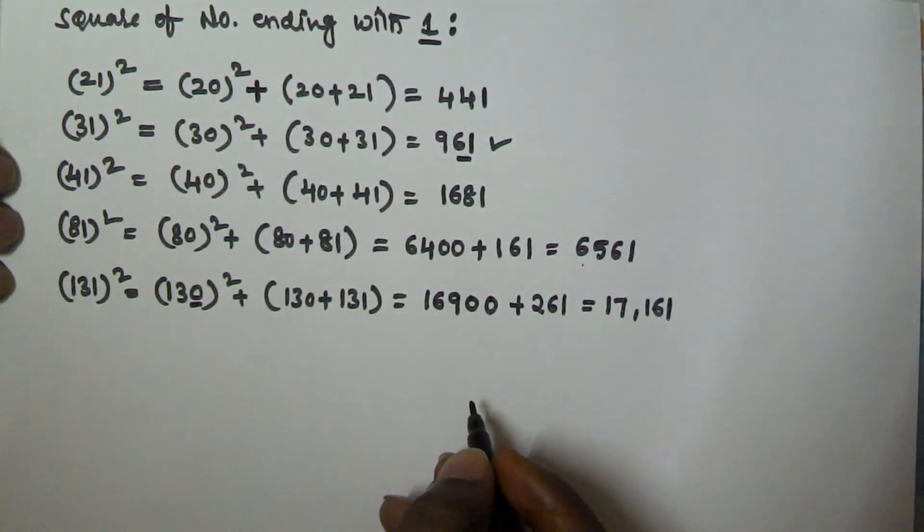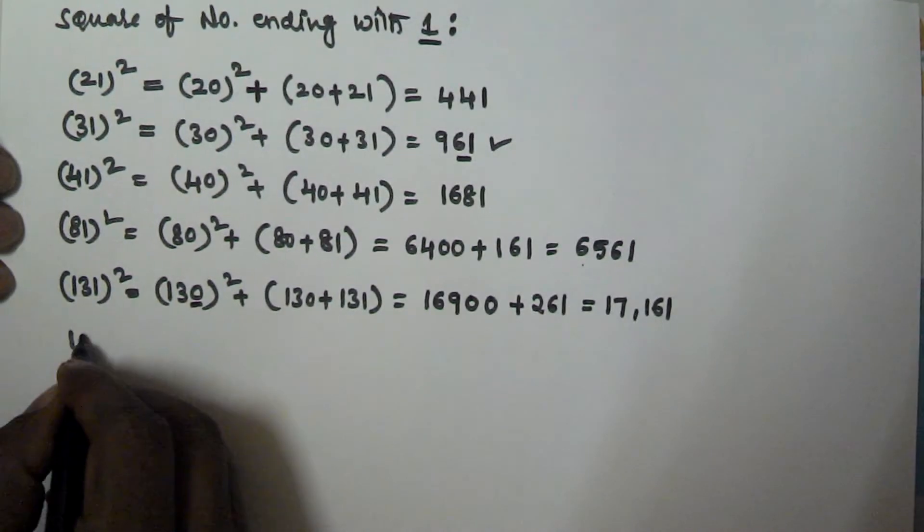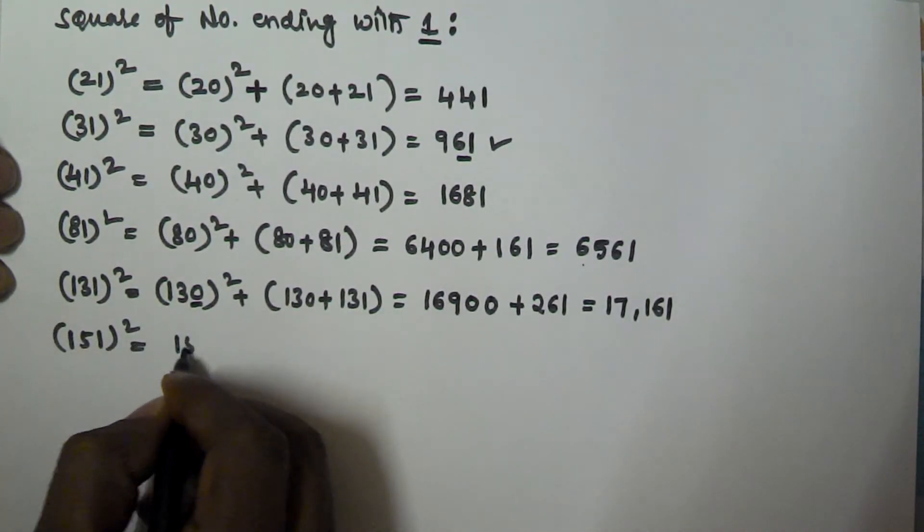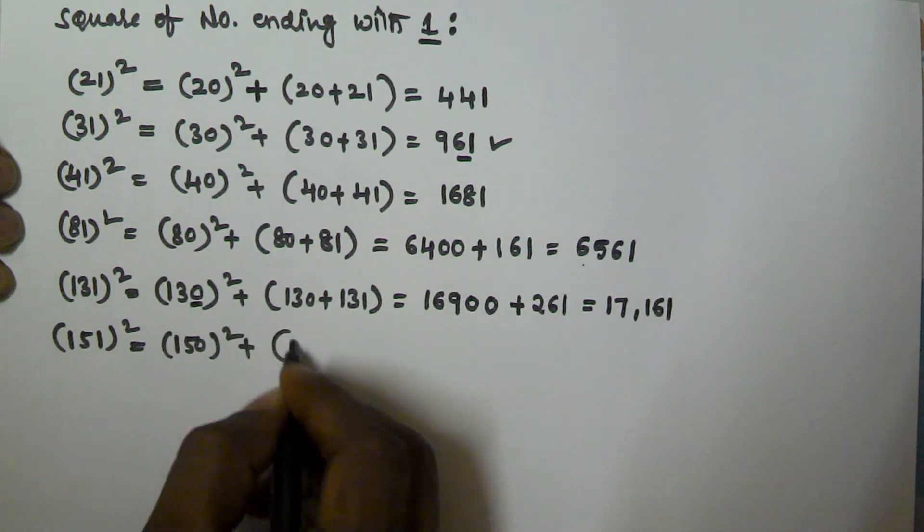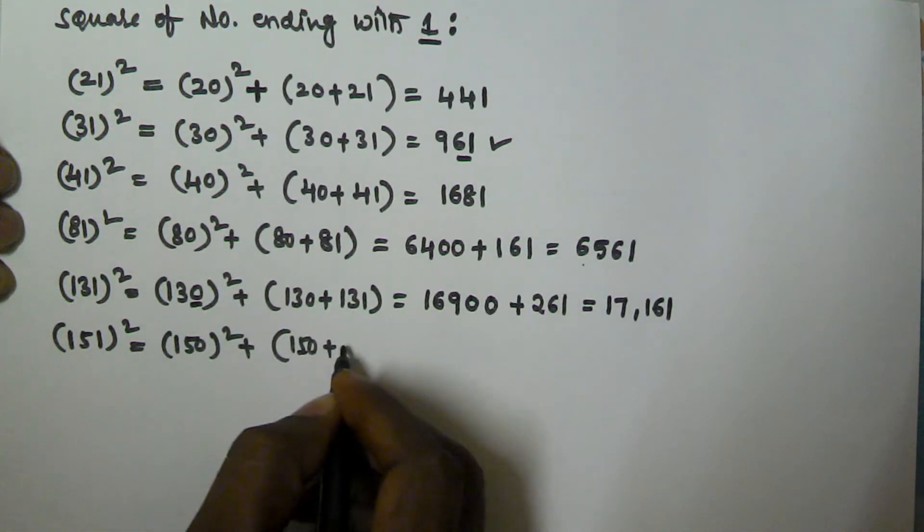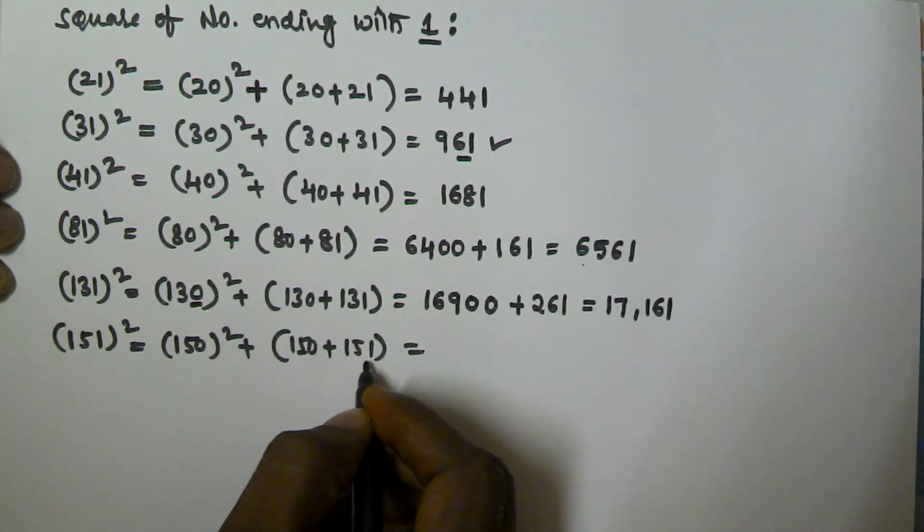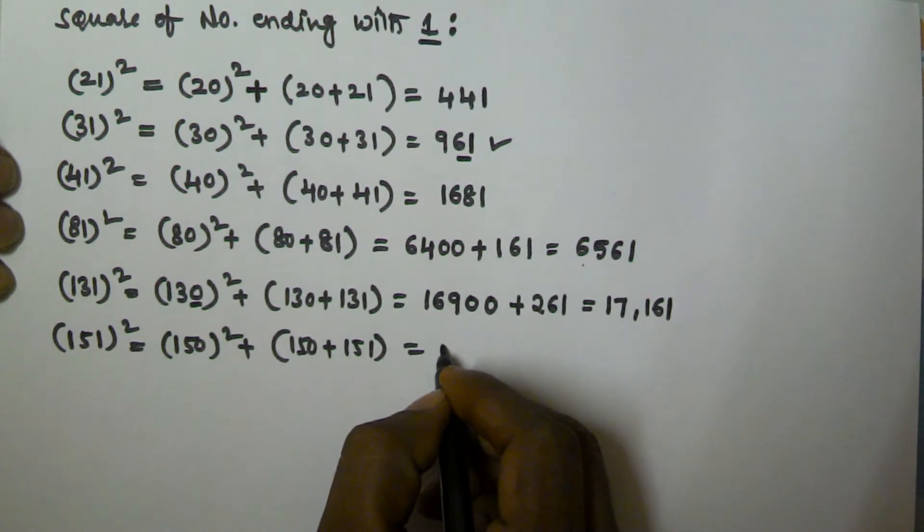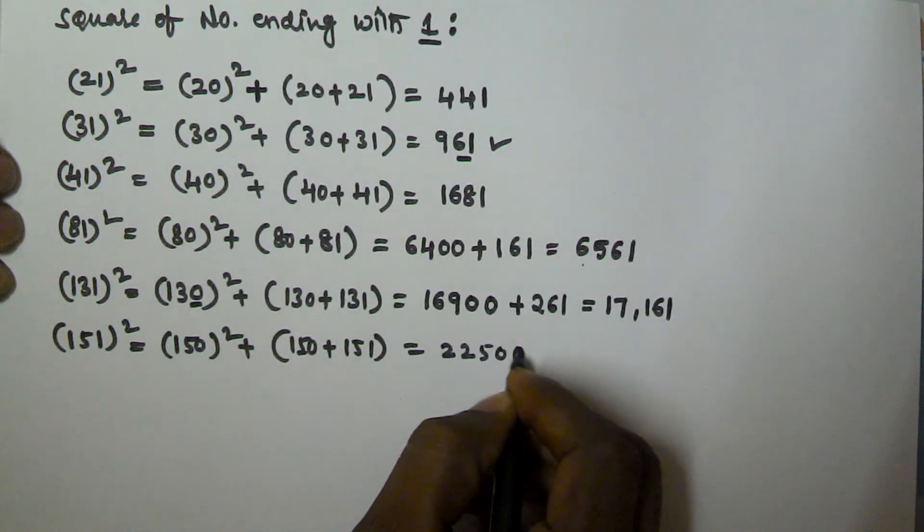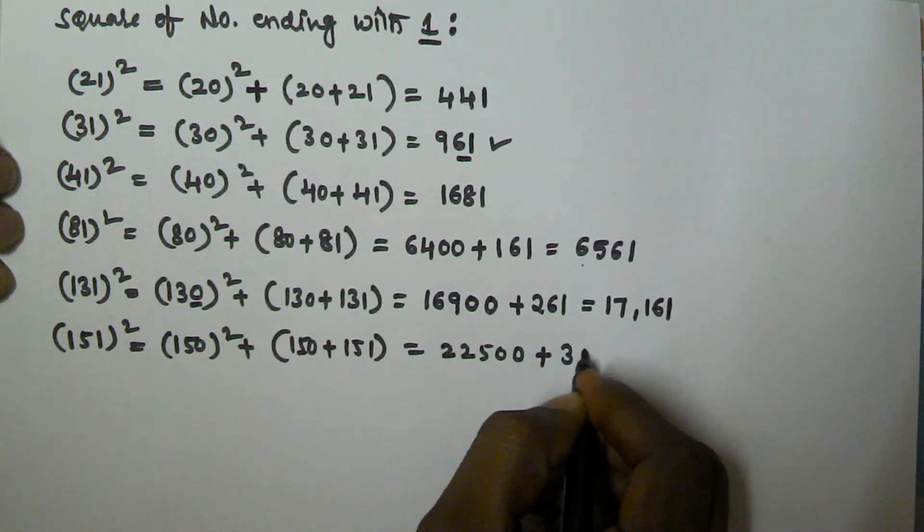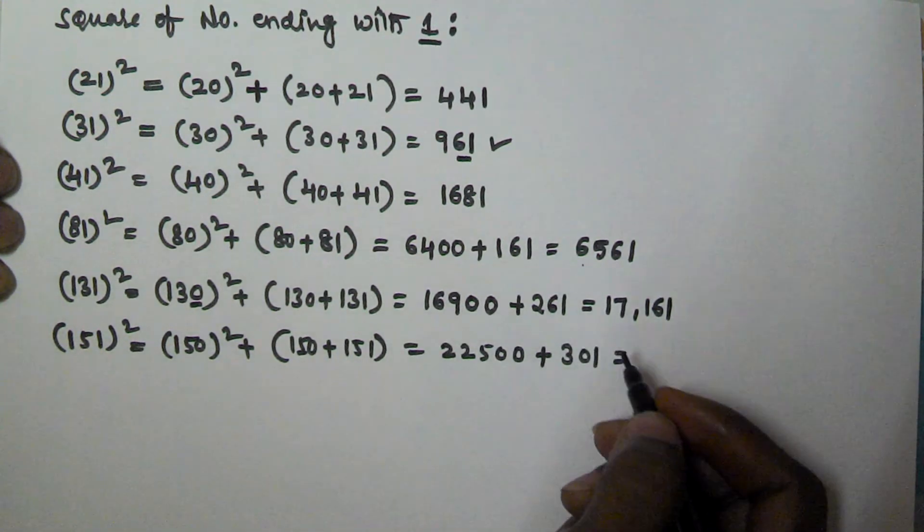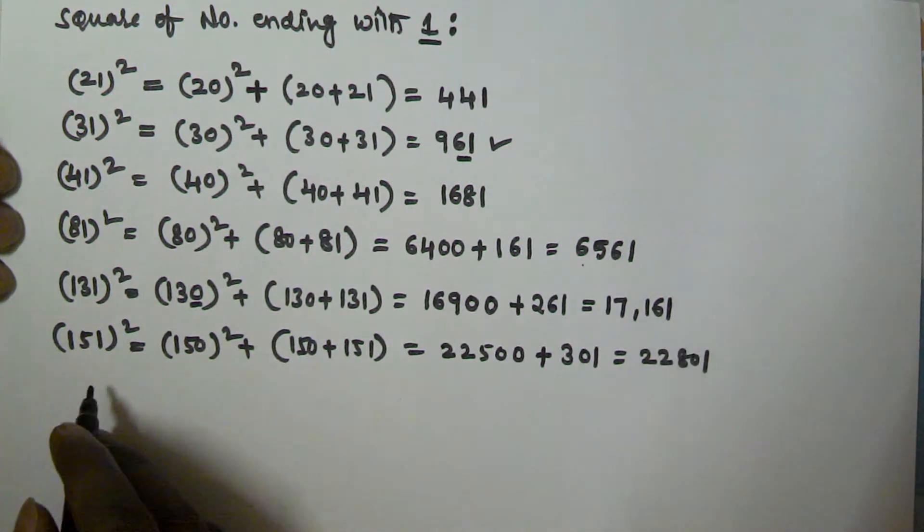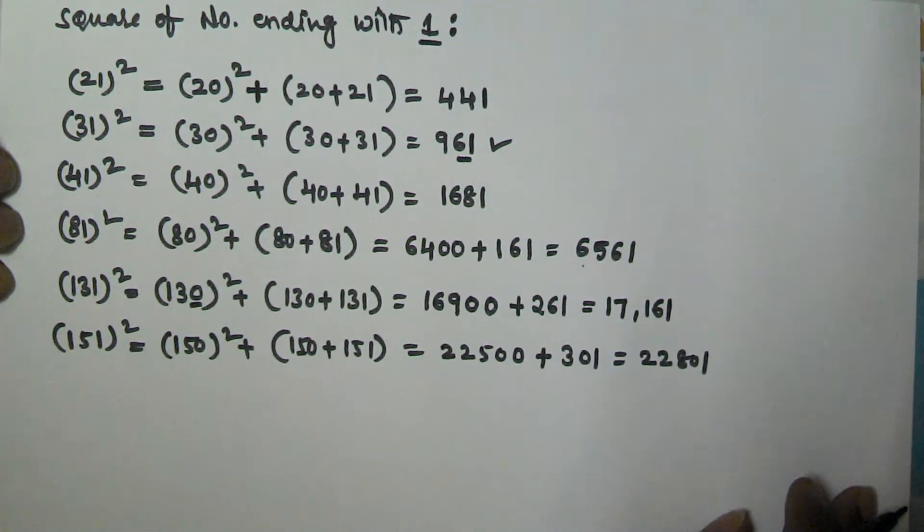So now let's find 151 square equivalent to 150 square plus 150 plus 151. So this is 301 and 15 square that is 225, so 225 and 2 zeros plus 301, so that is going to be 22801. So 151 square is 22801.